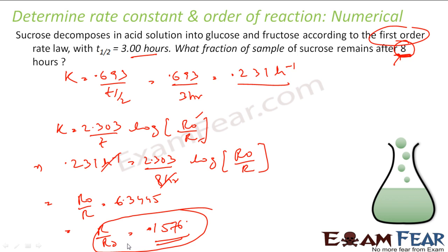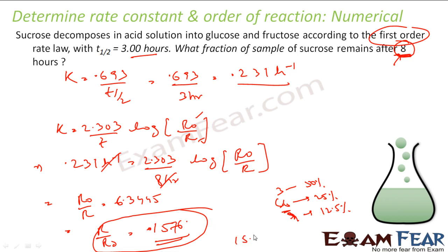That is approximately 15.76 percent remaining after 8 hours. We can verify logically: t½ = 3 hours, so after 3 hours → 50%, after 6 hours → 25%, after 9 hours → 12.5%. Since 8 hours falls between 6 and 9 hours, the answer should be between 12.5% and 25%, and 15.76% fits perfectly — confirming our answer is correct.